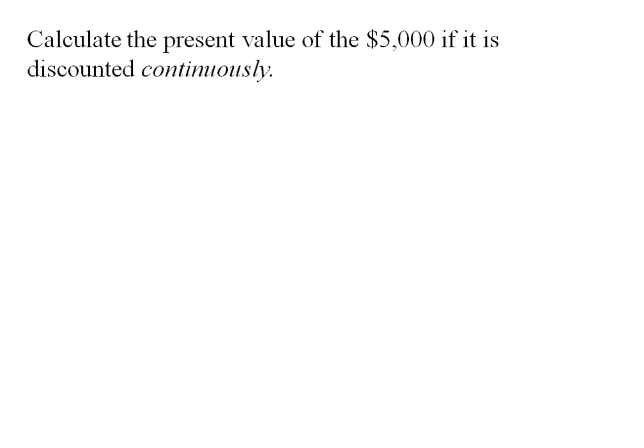Let's do the same problem but calculate at a continuous discount. We'll use our new formula: future value times e to the negative RT. Plugging in the 5,000, the 0.09, and the 6, working it through my calculator, I get $2,913.74.